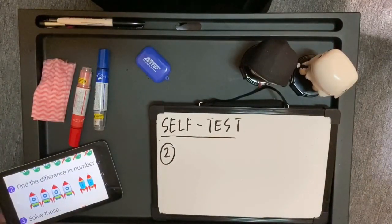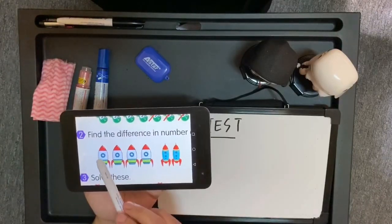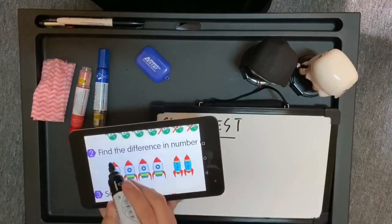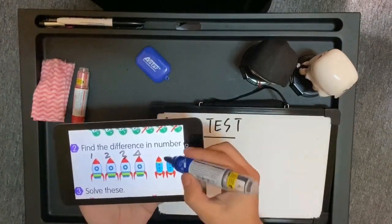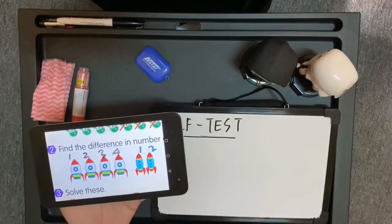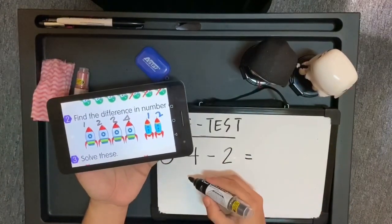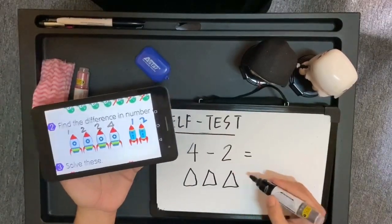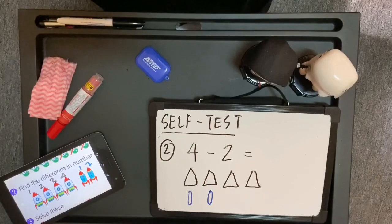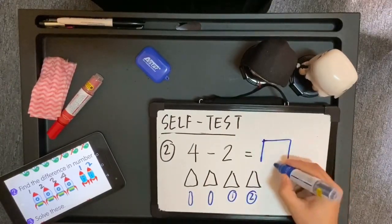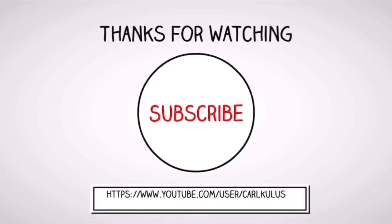Self test 2. Boleh tengok gambar. Find the difference in number — cari perbezaan — di antara roket-roket ini. Roket yang warna putih ada 1, 2, 3, 4. Manakala roket yang biru pula ada 1, 2. Ayat matematik kita untuk cari beza: nombor yang besar — 4 — akan menolak 2, nilai yang lebih sikit. Jadi roket yang banyak ni 1, 2, 3, 4, tolak dengan roket yang kurang 1, 2. Beza untuk kedua-dua roket ni adalah 1, 2. Jadi, jawapan kita adalah 2.